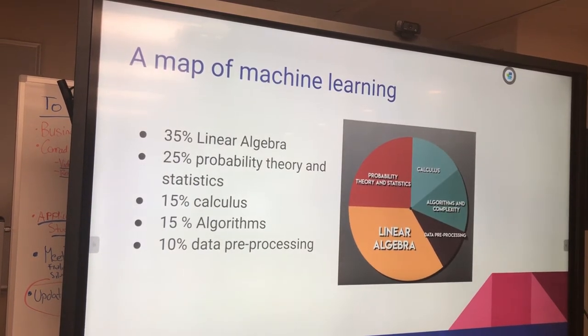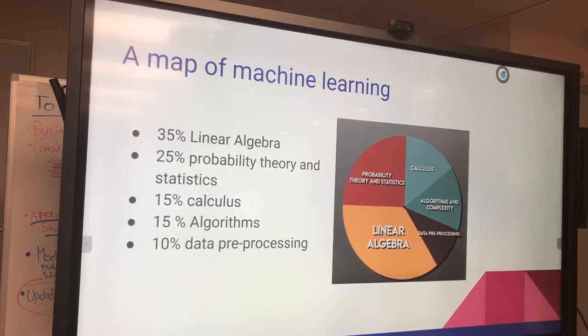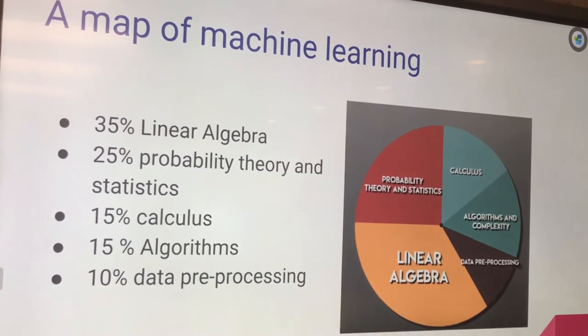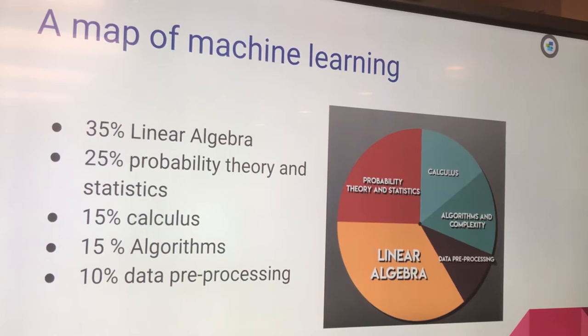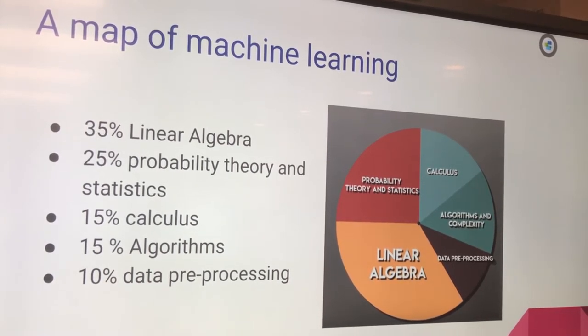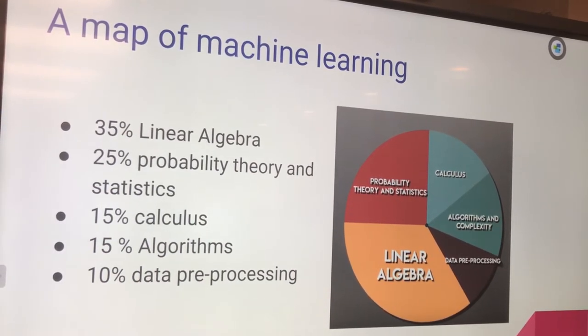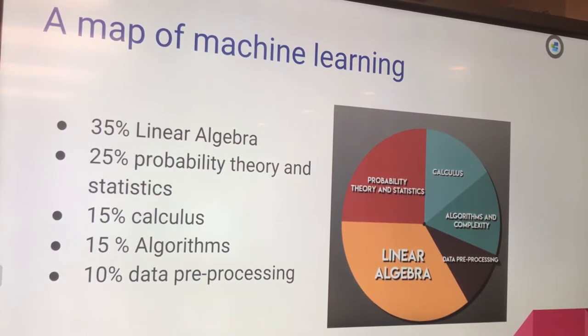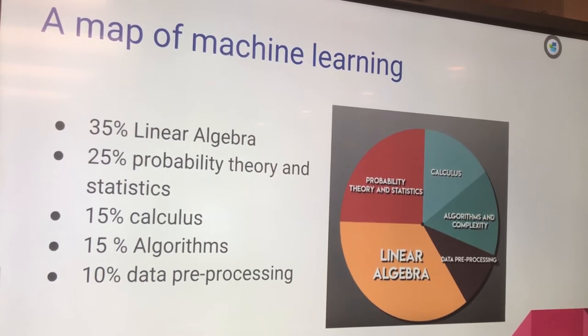Okay, I'm going to leave you with this. This is a map of machine learning. And if you're starting in machine learning and you're interested in the field and you're interested in automating all these problems that seem, at first, really complicated, but all it is is just a bunch of data, this is what you want to look at. 35% of machine learning is linear algebra. 25% is probability theory and statistics. 15% is calculus. Another 15% would be algorithms. And 10% would be data pre-processing.